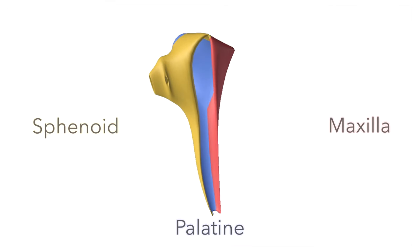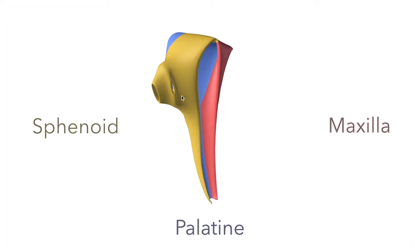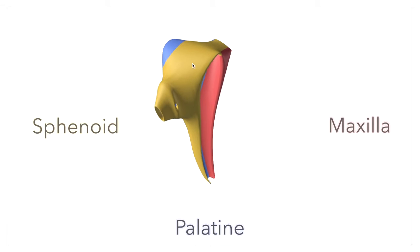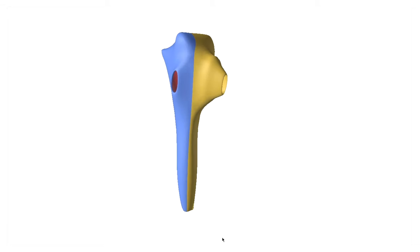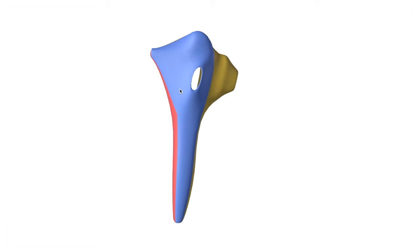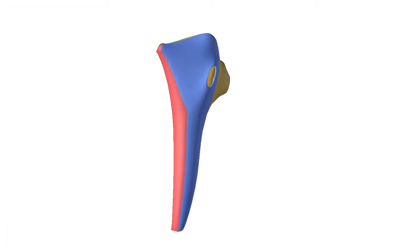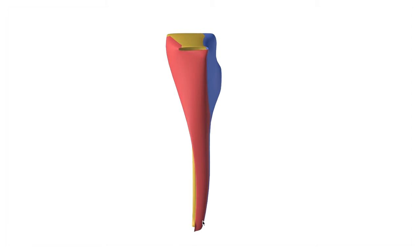So this posterior wall and roof is formed by part of the pterygoid process of the sphenoid. The medial wall is formed by the lateral surface of the palatine and the anterior wall is formed by the posterior surface of the maxilla.